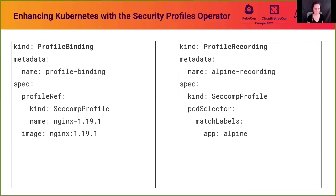Another exciting feature is the profile recording resource. For SecComp, it automatically generates a SecComp profile for a running workload — no more writing complex profiles by hand, no more guess-and-check of running the application and checking audit logs. You just create the profile recording resource and it automatically creates a SecComp profile Kubernetes resource that can already be used by your application. This depends on using CRI-O as your container runtime and the most recent version of CRI-O.